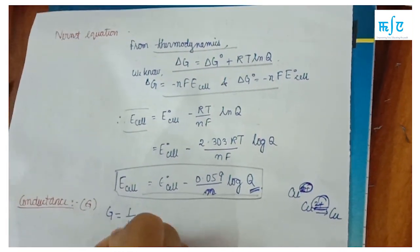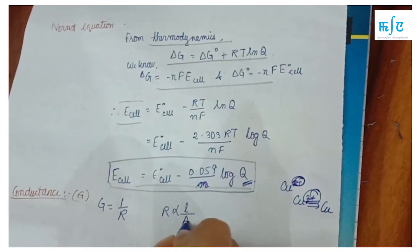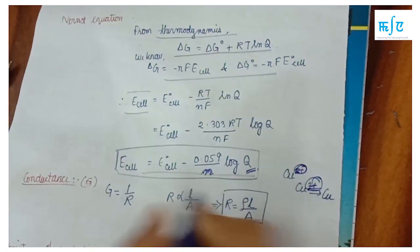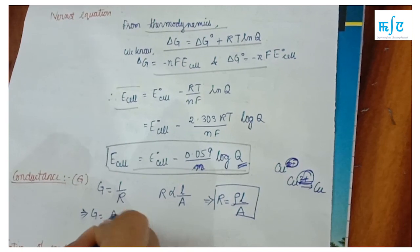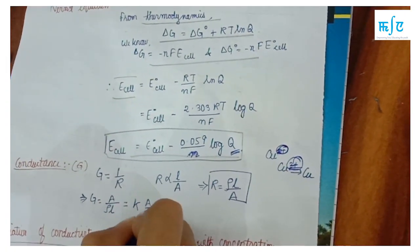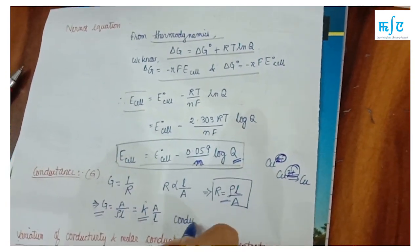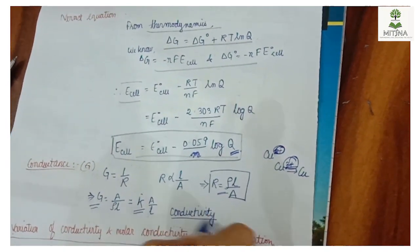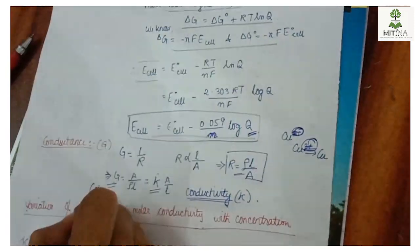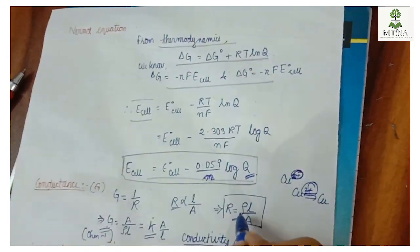Resistance is directly proportional to length and inversely proportional to area — this is the resistance formula. Conductance is the inverse of resistance. Conductance is expressed in ohm inverse (siemens). Molar conductance is related to conductivity and resistivity.